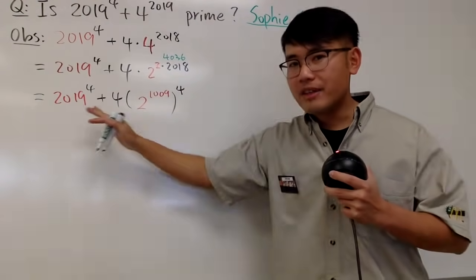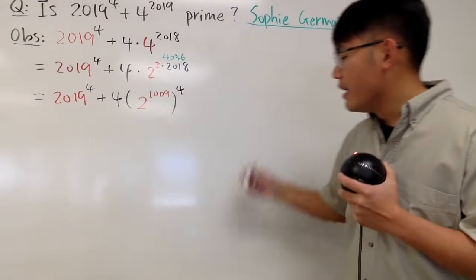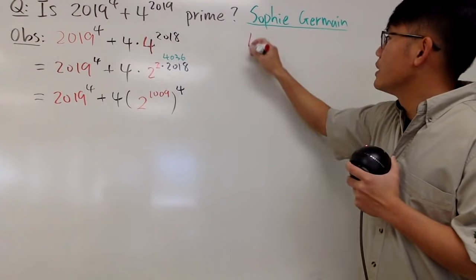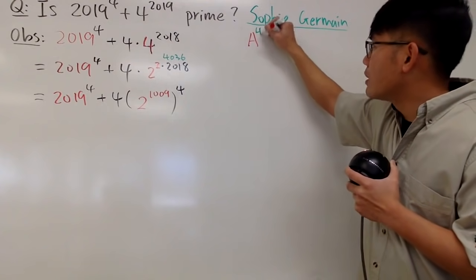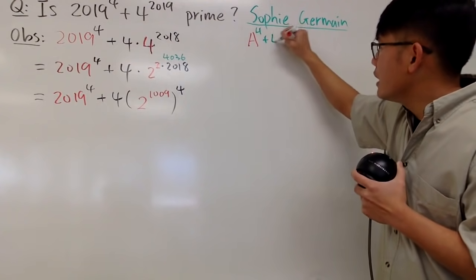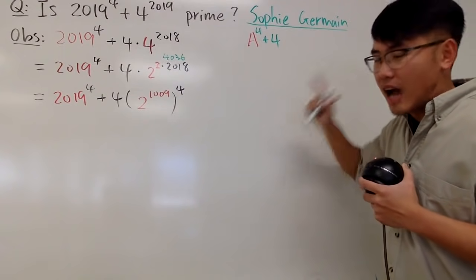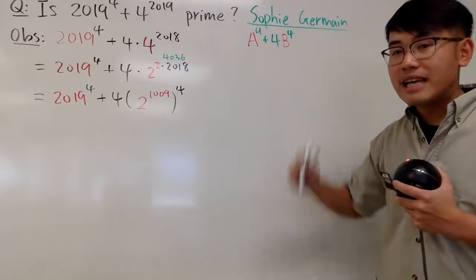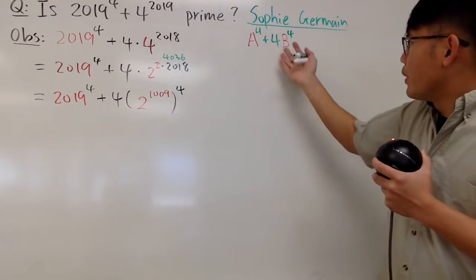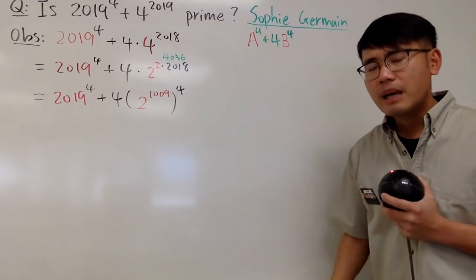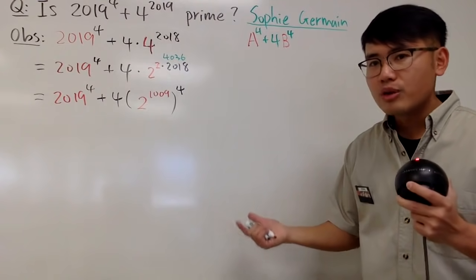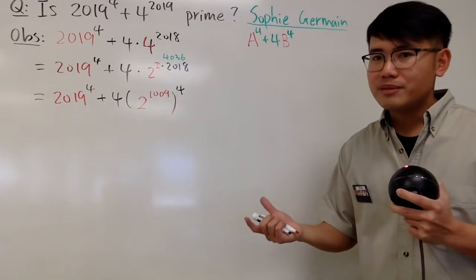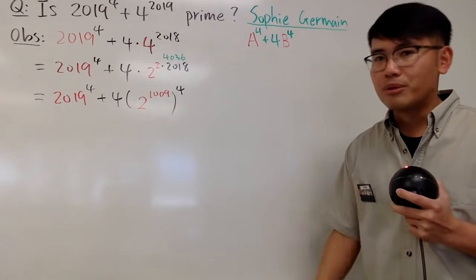And she says, when you have the expression in the following form, namely a^4 plus 4, that's a coefficient in the front, times some other thing, let's say b^4, like this. This right here is actually factorable. And you might be wondering, how is this factorable? Because back in the algebra days, your teacher told you the sum of two squares is not factorable with real numbers.